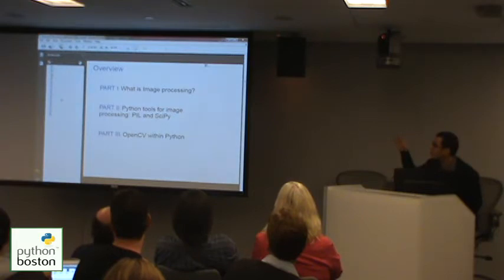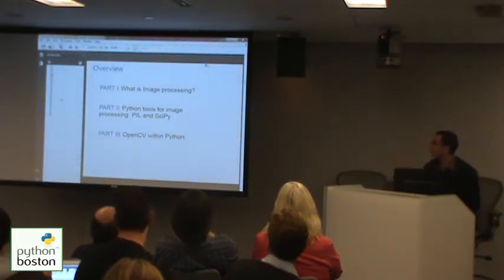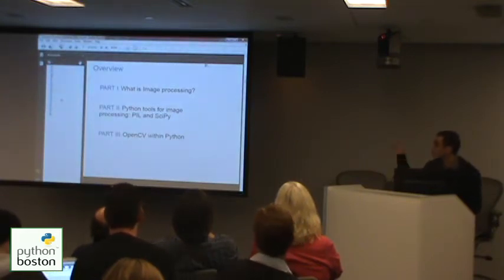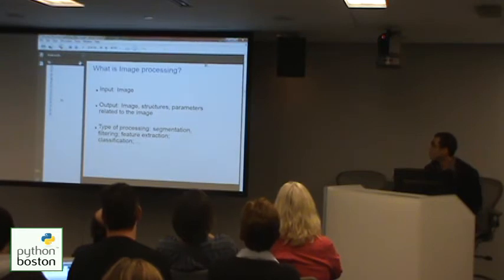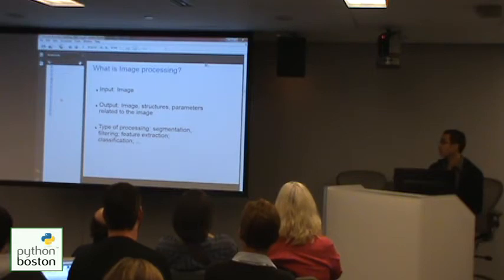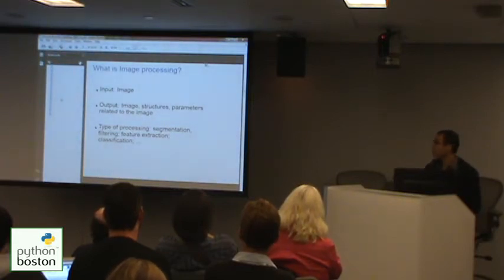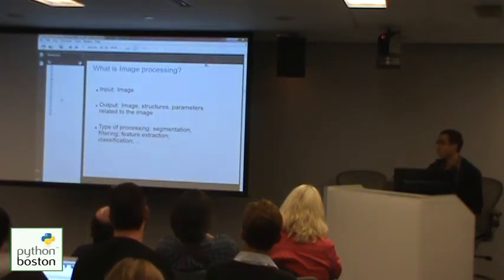I'm going to start by giving a brief definition of what image processing is, and after I'm going to present some tools for image processing. Image processing is a process that takes an image as an input and outputs another image — for example, an enhanced image — or parameters of the image structure, such as the location of some target in the image.